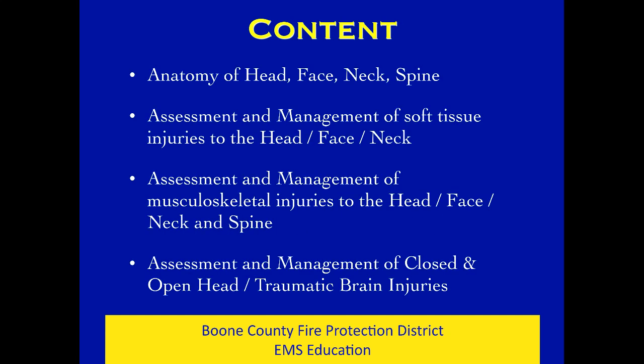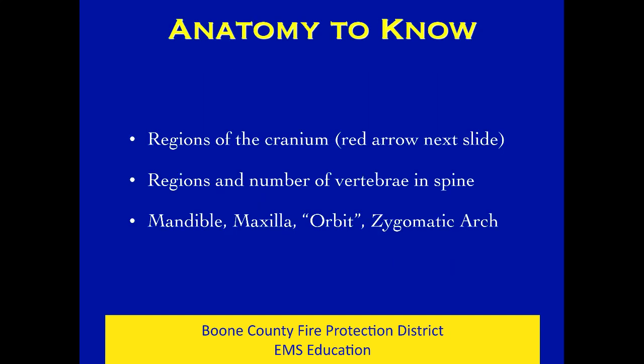Content we're going to go over: the anatomy of the head, face, neck, and spine that matters at the EMT level; how to assess and manage soft tissue injuries to the head, face, and neck; and how to deal with the musculoskeletal injuries to the head, face, neck, and spine. Then we're going to talk about assessment and management of closed and open head and traumatic brain injuries — TBIs. That's a little more complex topic. We'll start it here and pick it up in the medical sections when we talk about strokes and bleeds, but it's fundamental stuff for that discussion.